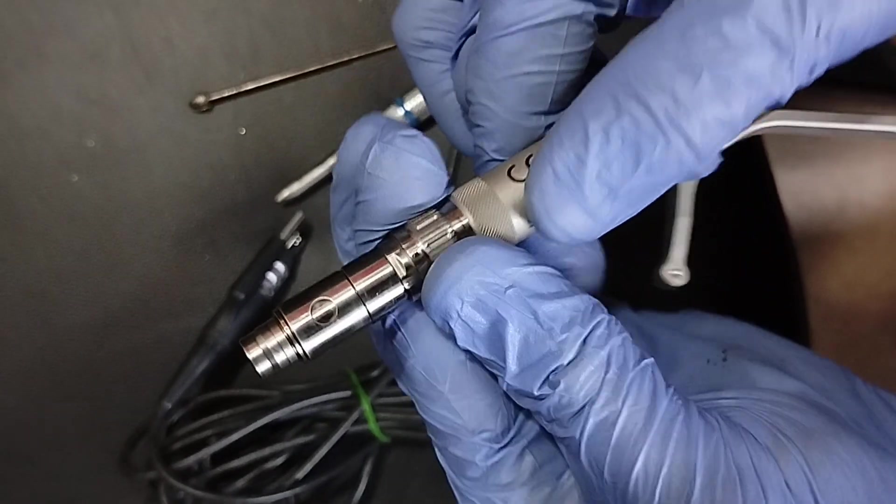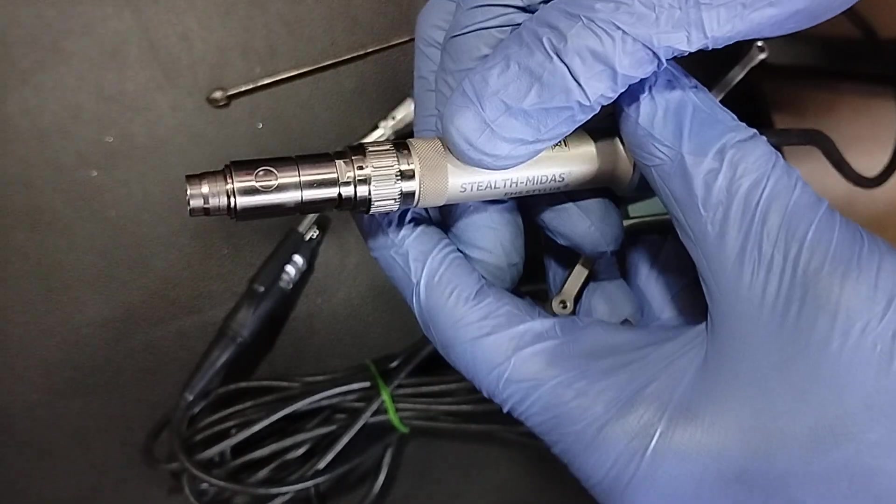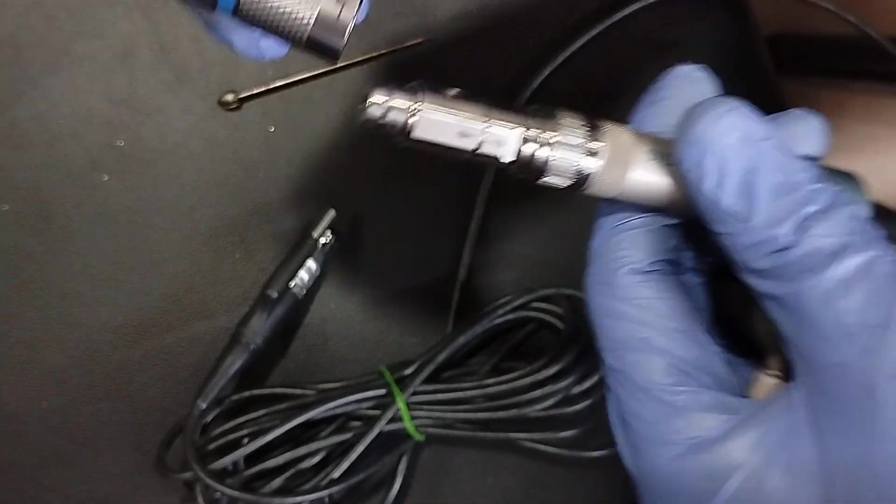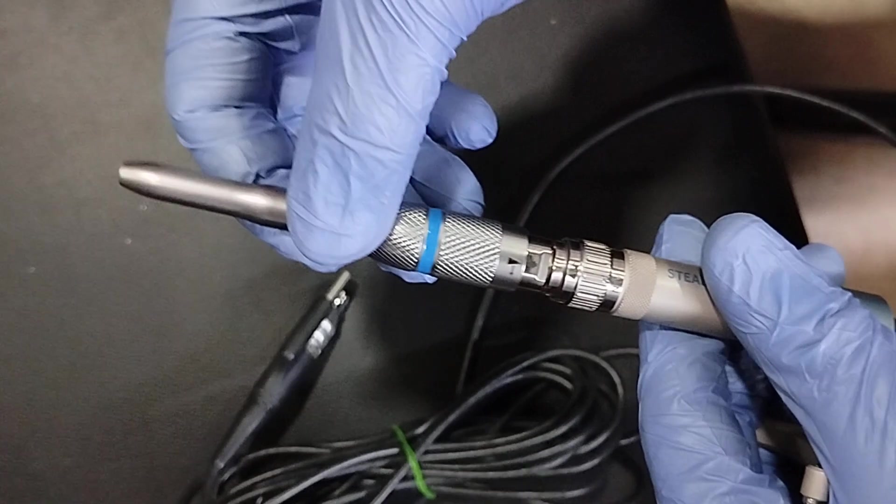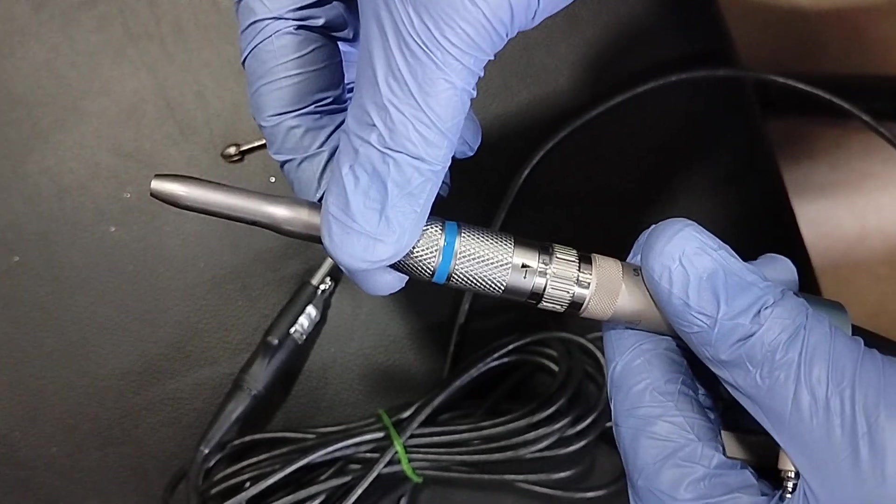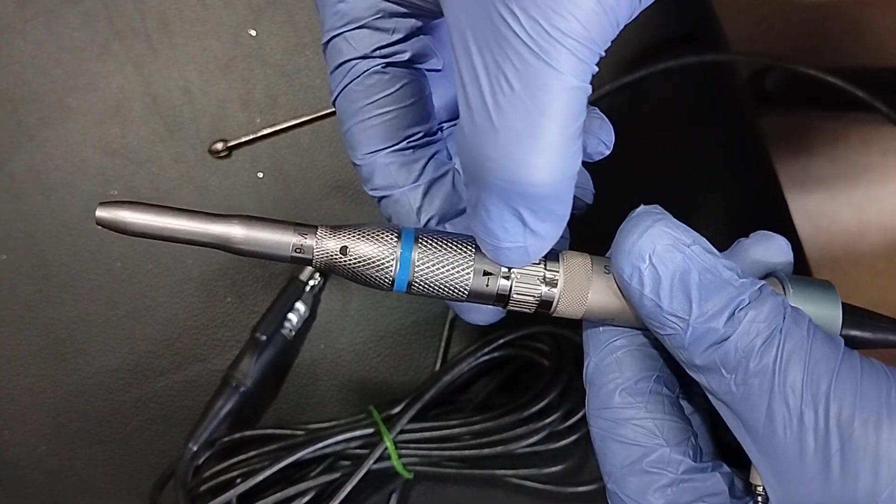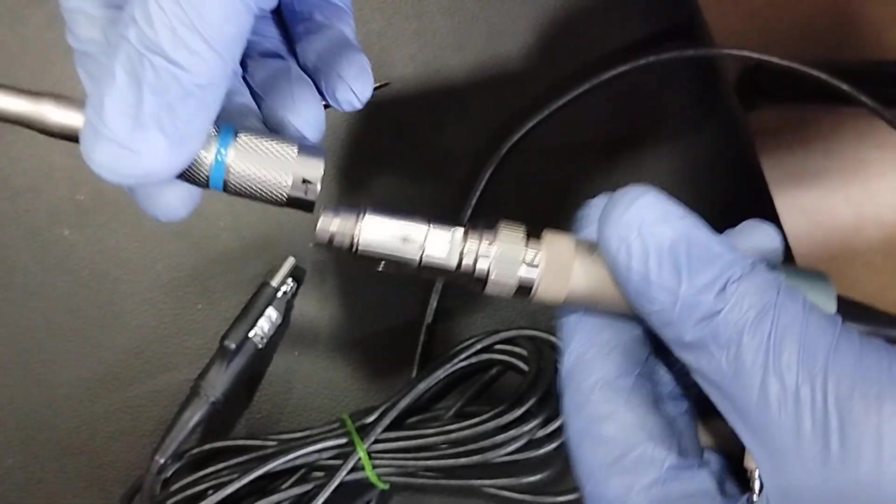So before connecting attachment, you have to make it in this direction to be unlock position. After that, you have to connect the attachment like this. Now you can see that all the arrow marks in the same direction.